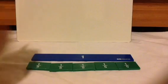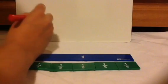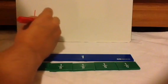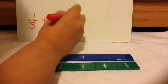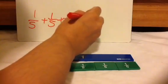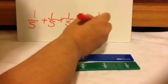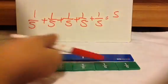So next one, let's look at fifths. 1 fifth plus 1 fifth plus 1 fifth plus 1 fifth plus 1 fifth equals 5 fifths.